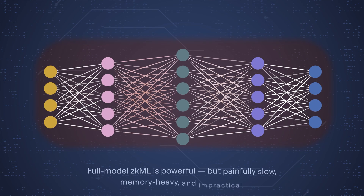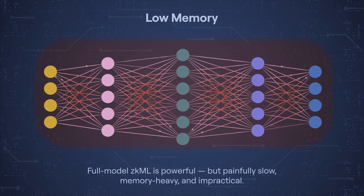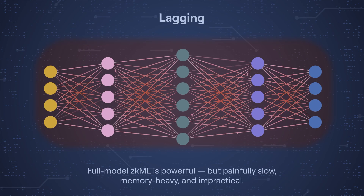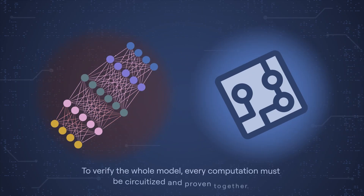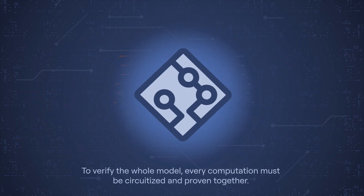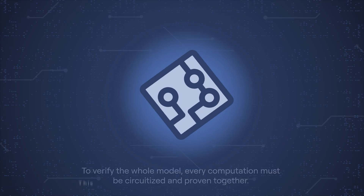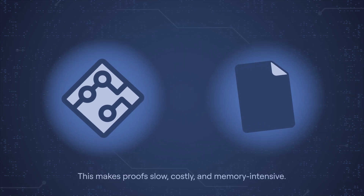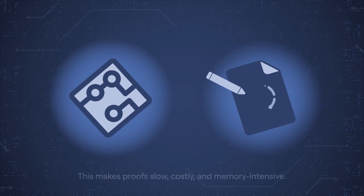Full model ZKML is powerful, but painfully slow, memory-heavy, and impractical. To verify the whole model, every computation must be circuitized and proven together. This makes proofs slow, costly, and memory-intensive.